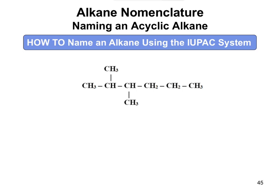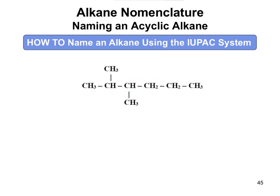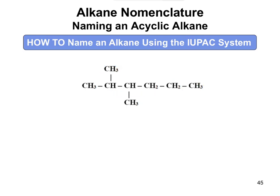Let's start doing some examples. The first thing we're going to do is find the parent chain. The obvious one here is to go straight across — that would be one, two, three, four, five, six carbons. But you always want to try it other ways to see if you can get anything longer. No matter what path we try here, we're going to get six carbons.